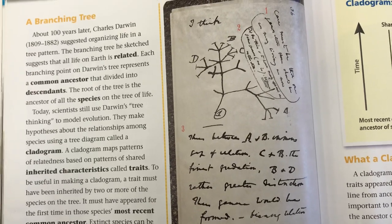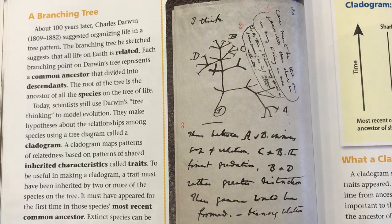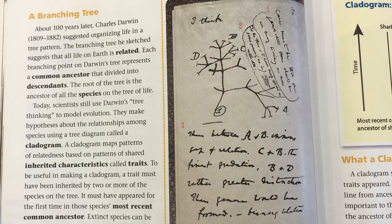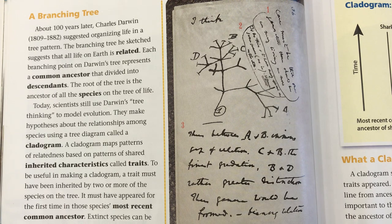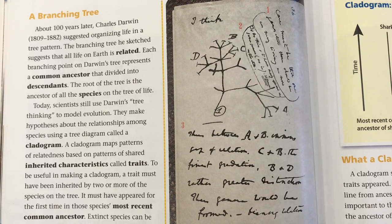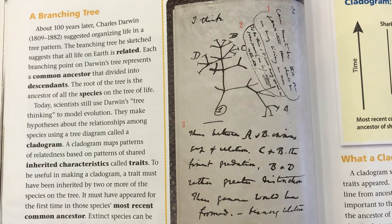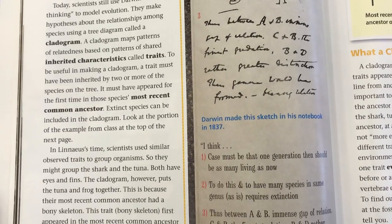A branching tree. About 100 years later, Charles Darwin (1809 to 1882) suggested organizing life in a tree pattern. The branching tree he sketched suggests that all life on earth is related. Each branching point on Darwin's tree represents a common ancestor that divided into descendants. The root of the tree is the ancestor of all the species on the tree of life. Today, scientists still use Darwin's tree thinking to model evolution. They make hypotheses about the relationships among species using a tree diagram called a cladogram. A cladogram maps patterns of relatedness based on patterns of shared inherited characteristics called traits. To be useful in making a cladogram, a trait must have been inherited by two or more of the species on the tree, and it must have appeared for the first time in those species' most recent common ancestor.